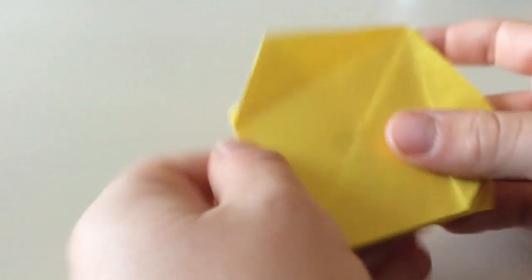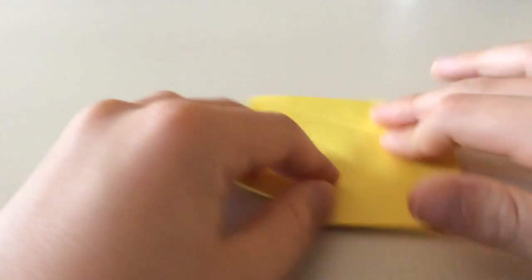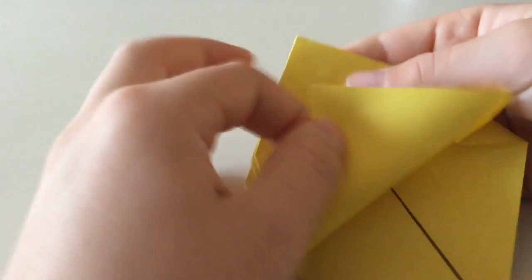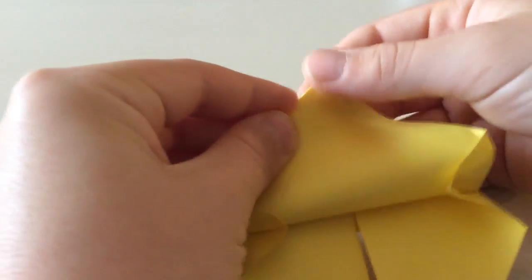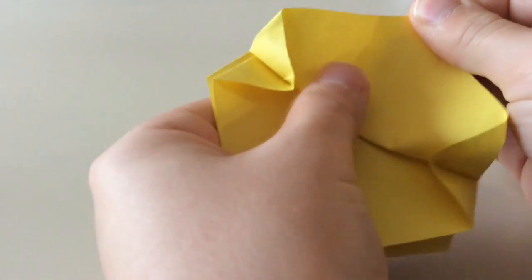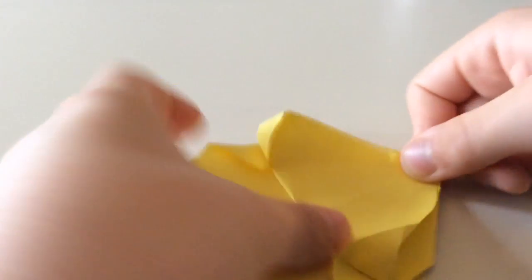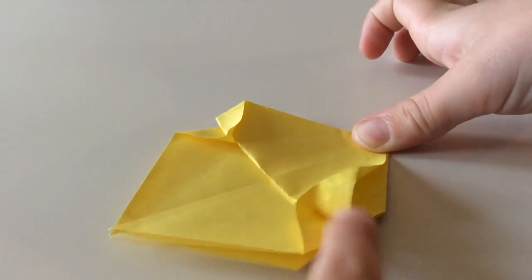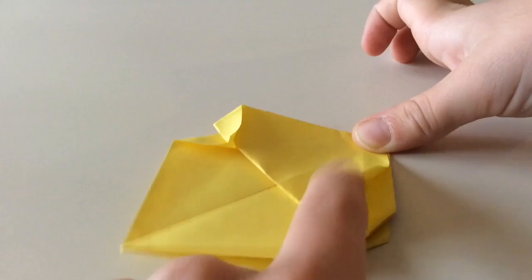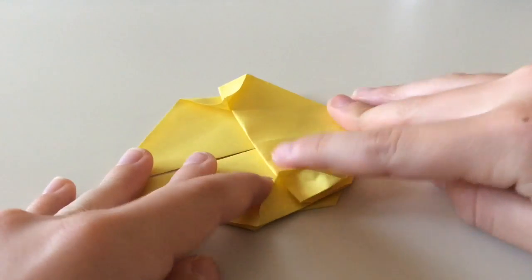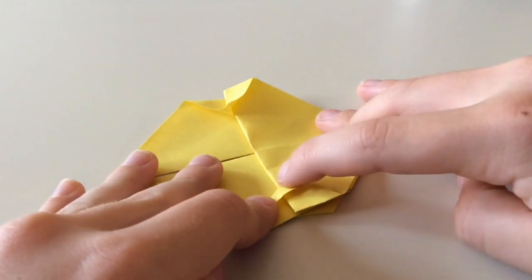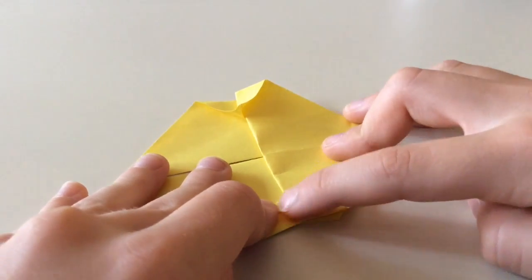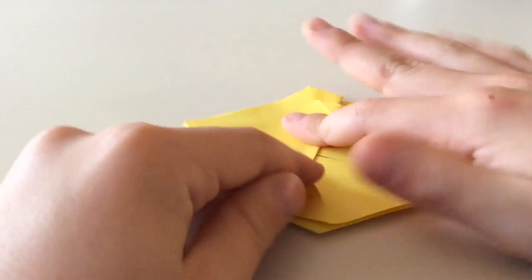And now we're just gonna turn it over and do the same. Turn it around. Fold it all the way up, holding the point. Just gonna crease these things for a second. Now we're gonna take it so that you see this crease aligns with this. And turn it over.